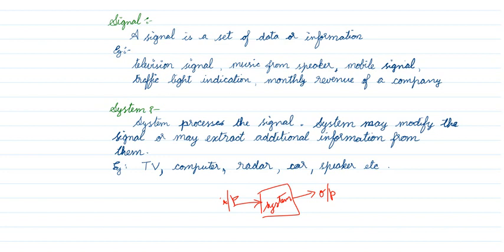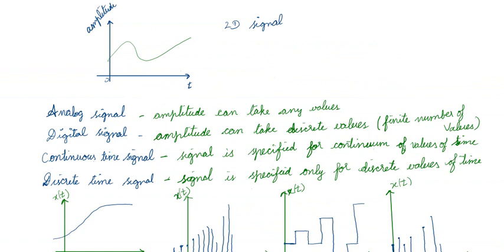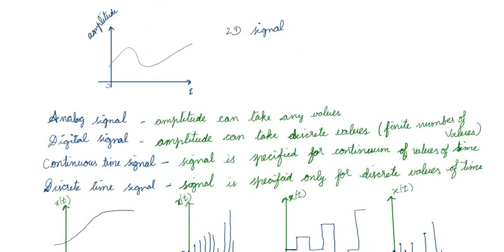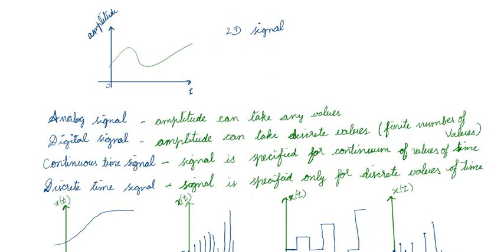In this subject we will deal with how to work with signals and systems. If you take any signal, we have two axes: the x-axis represents time and the y-axis represents amplitude. Such signals are called two-dimensional or 2D signals.